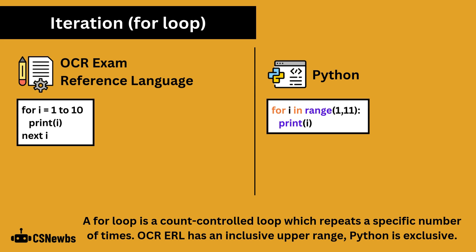A for loop is a count-controlled loop which repeats a specific number of times. OCR-ERL has an inclusive upper range and Python's is exclusive. So 1 to 10 in OCR-ERL means 1, 2, 3, 4, 5, 6, 7, 8, 9, and 10. 1 to 10 in Python would actually only go to 9, so you have to write 1 comma 11 to include 10.